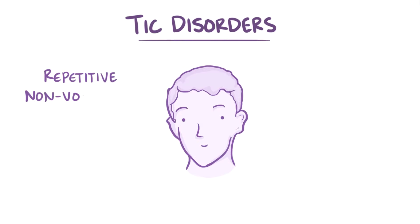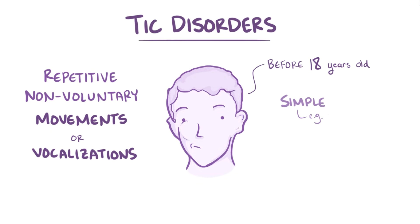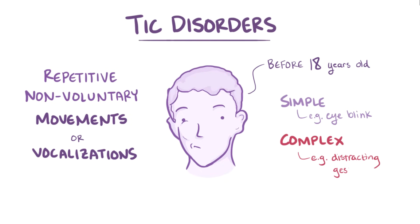As a quick recap, tic disorders are repetitive, non-voluntary movements or vocalizations that appear before the age of 18. These tics can be simple, for example barely noticeable eye blinks, as well as complex, like compulsively producing really distracting gestures.